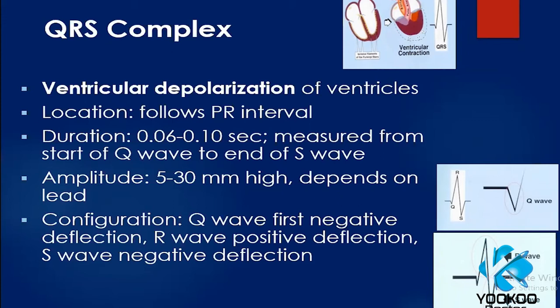The QRS complex represents ventricular depolarization. It usually follows the PR interval with a duration of 0.06 to 0.12 seconds, measured from the start of the Q wave to the end of the S wave. Its amplitude can be up to 30 mm high depending on the lead. The Q wave is the first negative deflection, the R wave is a positive deflection, and the S wave is a negative deflection. In some leads you may not see Q, R, or S waves.